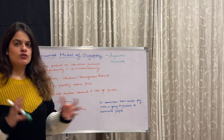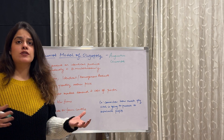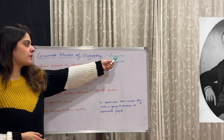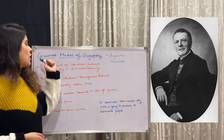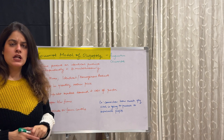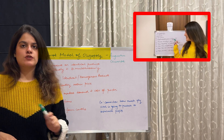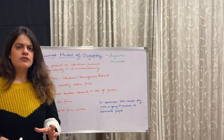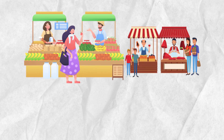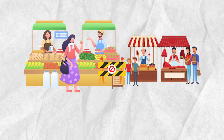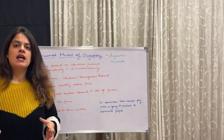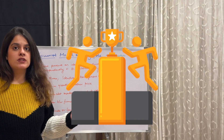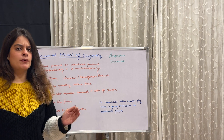Coming to the introduction as well as the assumptions of this model — as the name suggests, this model was given by Augustine Cournot, and hence the name Cournot's model of oligopoly. In case you don't know oligopoly, oligopoly is a market where there are few firms, there are barriers to entry and exit, and obviously a lot of competition between the firms because there are just a few number of firms.